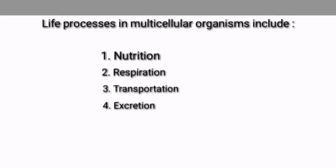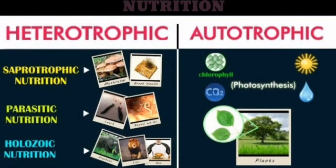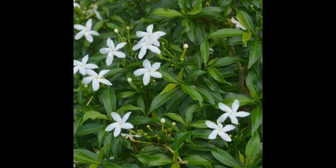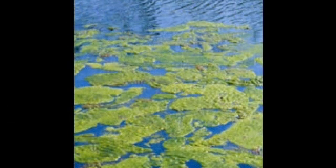Now let's start with nutrition. Nutrition in all living organisms consists of two types: autotrophic and heterotrophic nutrition. What is autotrophic nutrition? It refers to nutrition in which organisms produce their food on their own, like green plants and blue-green algae.